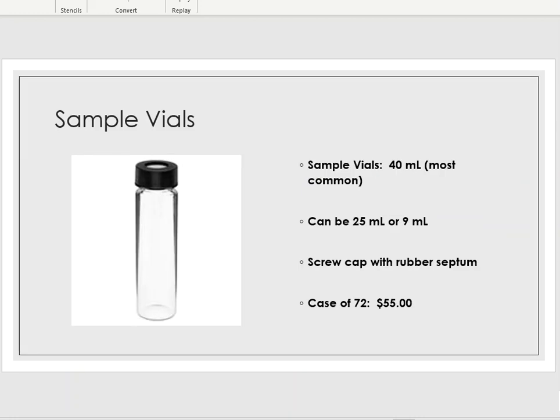Next are the sample vials. I told you that we order 40 mL vials, but vials can come in different sizes. Another common size is going to be 9 milliliters instead of 40 milliliters, and they can also come in 25 milliliters. But 40 is going to be the go-to volume almost every single time when it comes to the TOC instrument. Up here at the top there is a screw cap on top of the vial with a piece of rubber septum.